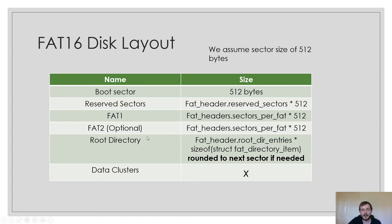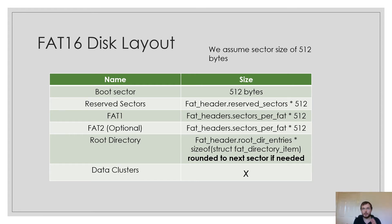After the second file allocation table — or the first if you don't have a second — we have the root directory. The size of the root directory is specified in a field in the file allocation table header called root directory entries. The size is simply the root directory entries multiplied by the size of the FAT directory item structure. We also need to round this up to the sector size, so the root directory will always use at least one sector — we round that up to 512. If the size doesn't fit into a sector we need to add one sector.